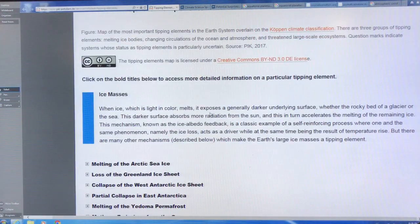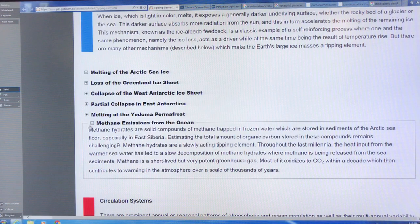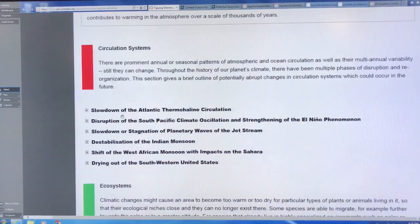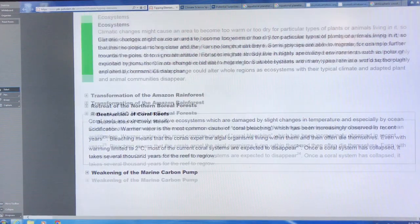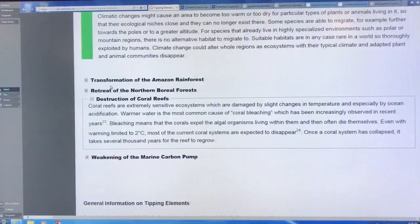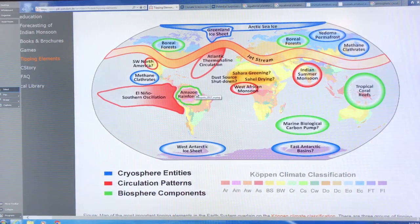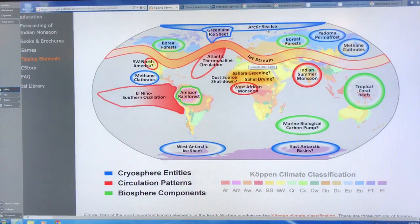So here, this is broken down into the ice masses, and so here we go. These are all the different components, for example, and you can just click on the list to get a good description of what that particular tipping element is, the circulation system tipping element, and the ecosystem tipping element. So I highly recommend that you go to this site and just look at these tipping factors, which are crucial in the earth system.